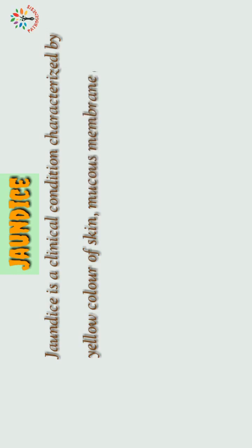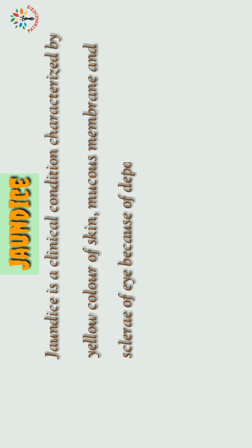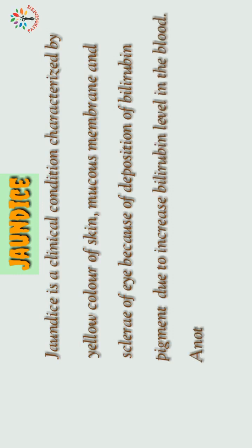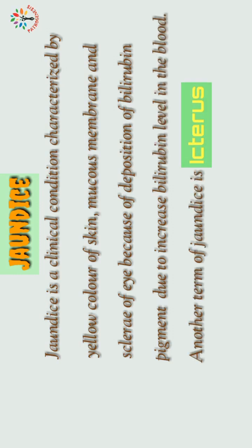Jaundice is a clinical condition characterized by yellow color of skin, mucous membrane, and sclera of the eye, because of deposition of bilirubin pigment due to increased bilirubin level in the blood. Another term for jaundice is known as icterus.